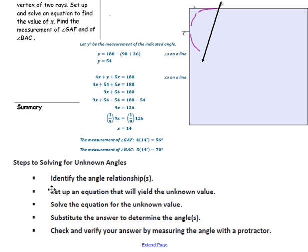In this lesson, you have learned the steps to solving for unknown angles: identify the angle relationships, set up an equation that will yield the unknown value, solve the equation for the unknown value, substitute the answer to determine the angle, and check and verify your solution by measuring the angle with a protractor.